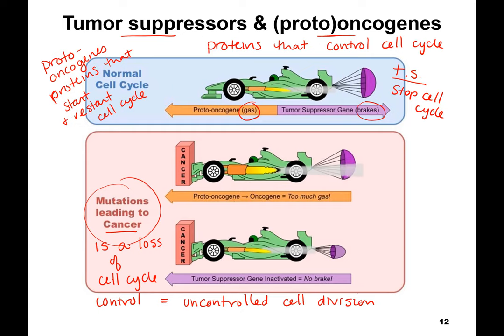If you have a proto-oncogene mutation, we now call it an oncogene, which is cancer-causing — it's like having too much gas, so you're flying through all those red lights. Tumor suppressors, if you have a mutation, what they normally do is stop the cell cycle — now you have no brakes, so you're still flying through the red light. You have uncontrolled cell division: you're not stopping, not checking everything to make sure it's okay, just going and going and dividing and dividing — and that is what cancer is.